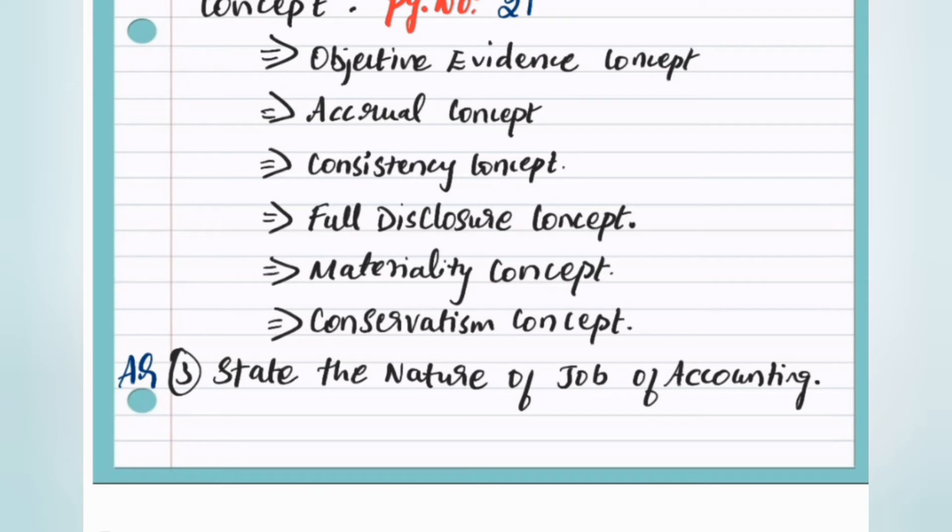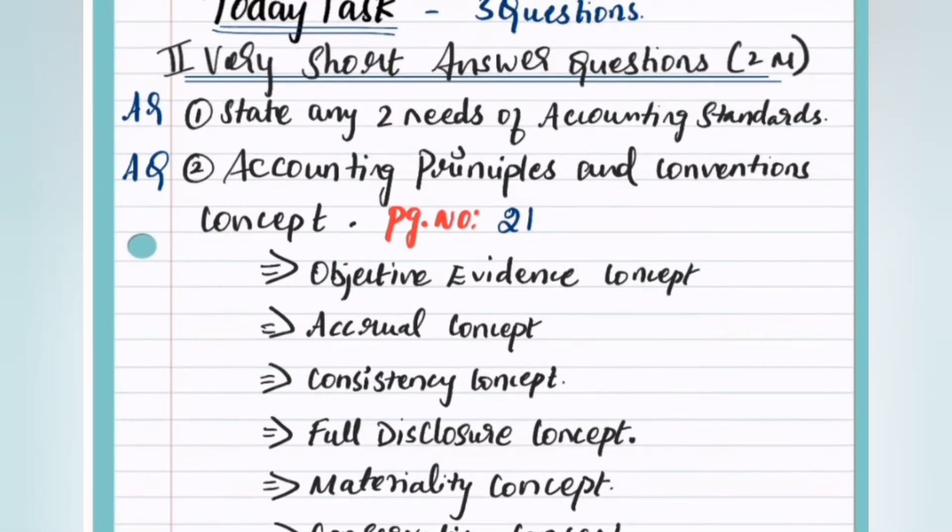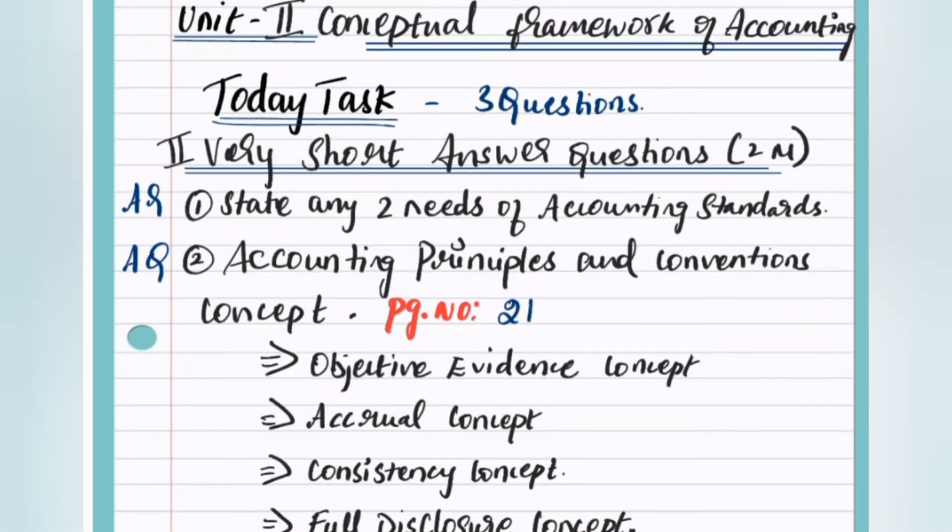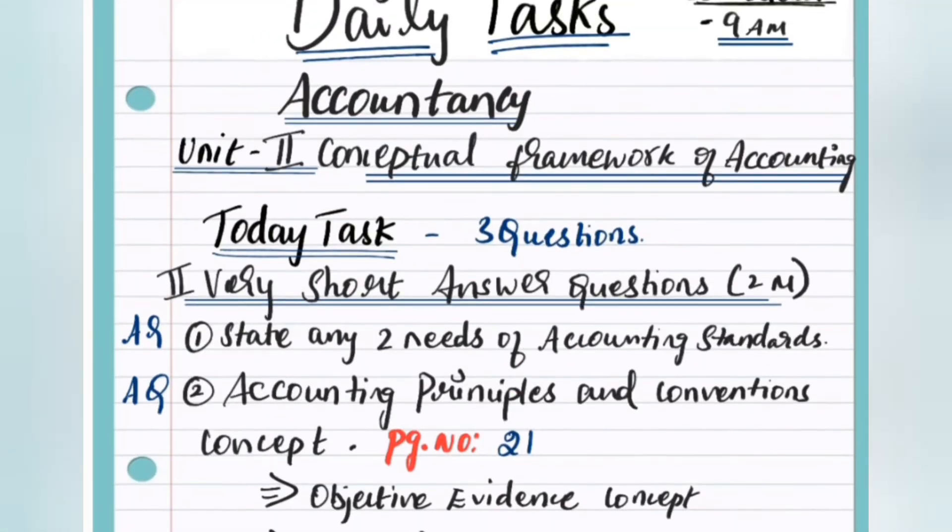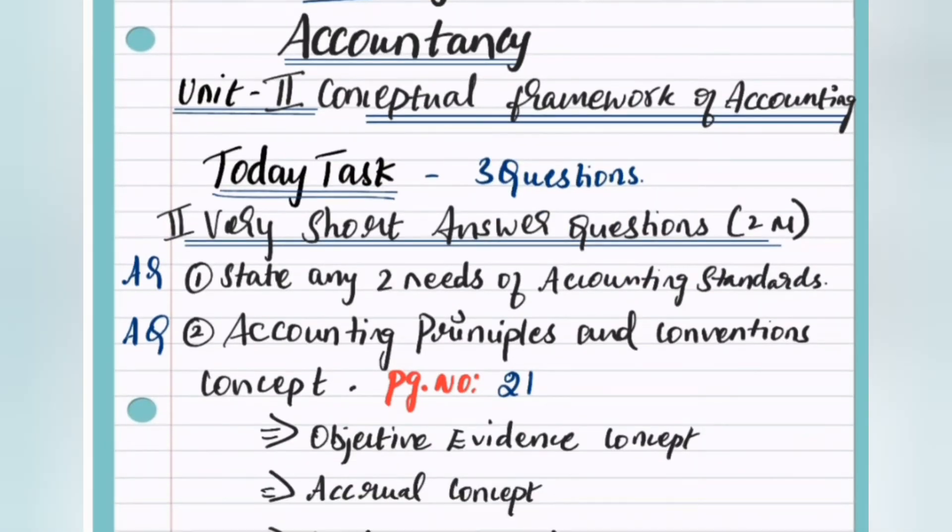The next additional question is: State the nature of job of accounting. We have only three questions total. If you have any doubts about which questions to answer or need further instructions about the additional questions, you can ask in the description box below to find the questions.